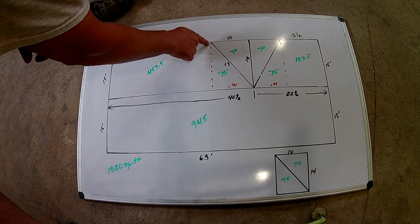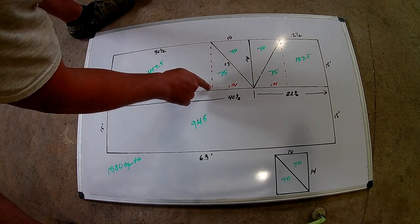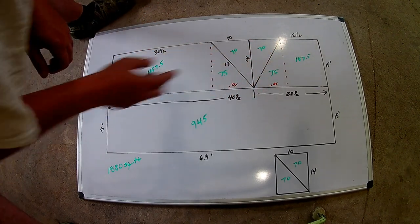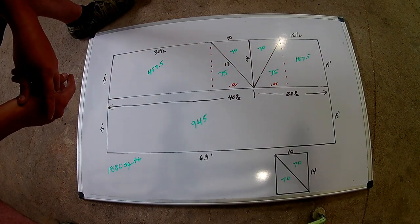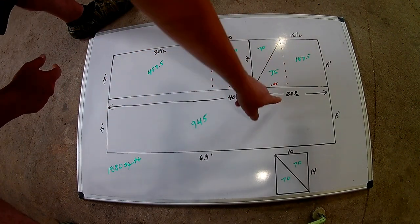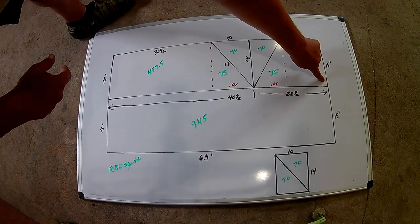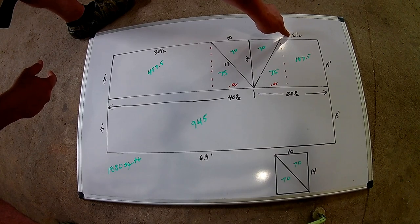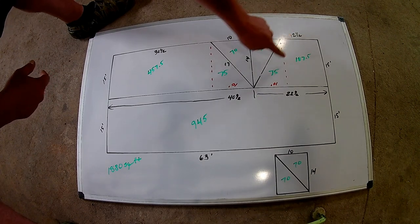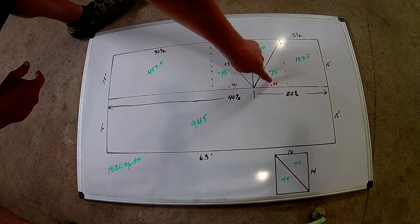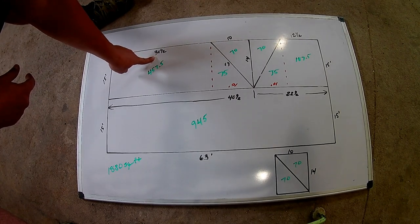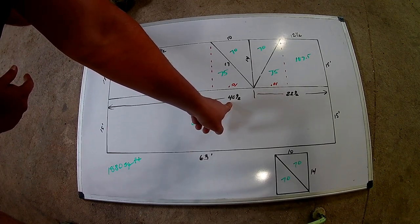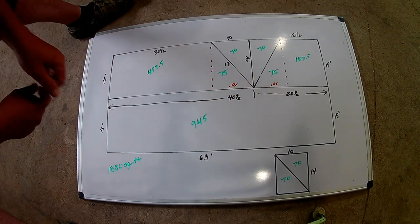Now here, I've just drawn some lines here to figure out these triangles, the square foot of these triangles. Now we have 22 and a half feet from here to here. We're going to subtract 12 and a half feet from that, which is going to give us 10 feet here. And we have 30 and a half feet here. We're going to subtract that from 40 and a half. We also have 10 here.